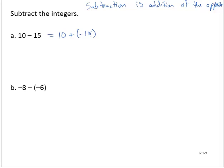Now, using our rules for addition, I have different signs. So I find the difference and keep the sign of the larger. The difference between 10 and 15 is 5. Keep the sign of the larger, 15 is larger than 10. Negative 5.